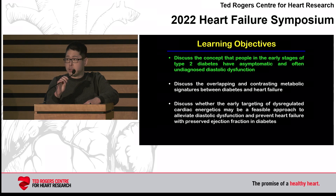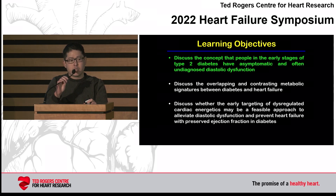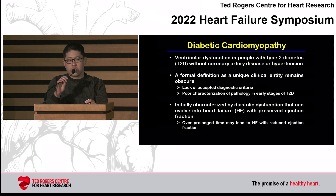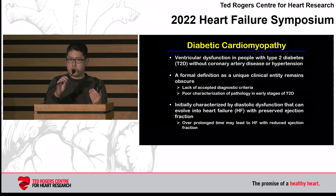There are three major learning objectives I'd like to go over today. The first is to highlight the concept that in the early stages of type 2 diabetes, it's really characterized by diastolic dysfunction, which is a defining feature of diabetic cardiomyopathy. Diabetic cardiomyopathy was a term first coined in the 1970s from pathological findings by Peter Ruber and colleagues, and was given the definition: ventricular dysfunction in the absence of macrovascular cardiovascular disease in an individual with diabetes.